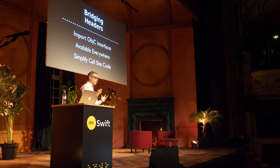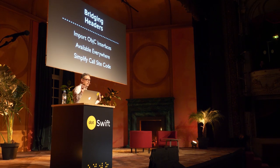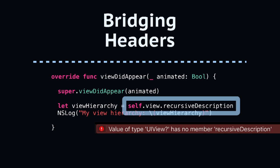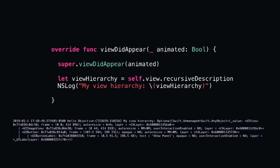I want to encourage you to use bridging headers to facilitate this in a cleaner way. Most of us think of bridging headers as a way to import legacy Objective-C headers, but it's also an opportunity to completely reshape how Swift sees the Objective-C landscape in your app. For example, if I add a recursive description property to UIView in the bridging header — flagged with #if DEBUG — Swift accepts it, and self.view.recursiveDescription works with no errors.